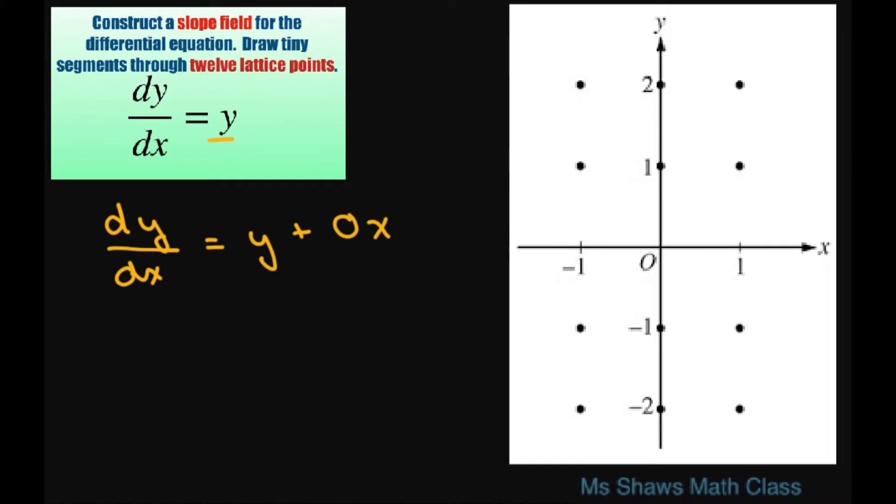So basically you're looking at your y values. Basically I have 12 lattice points if you count these. You always want to count your x axis, so I have 15 instead of 12. You could choose whatever you wanted to, but you need to choose this line here.